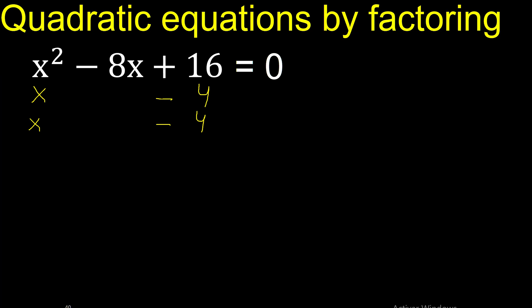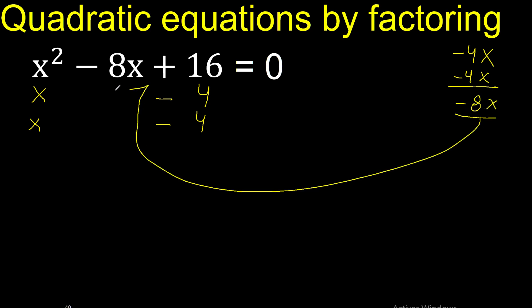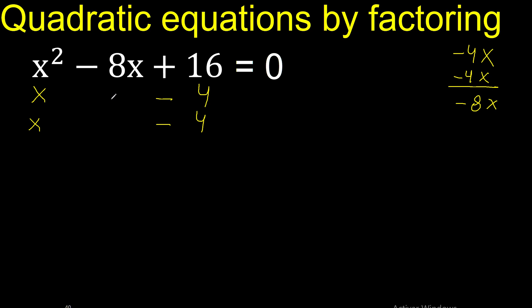Let's analyze if it is correct: x multiplied by minus 4, and x multiplied by minus 4. Minus 4 minus 4 is minus 8x. Therefore it is correct.